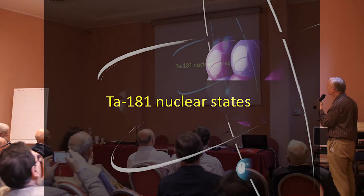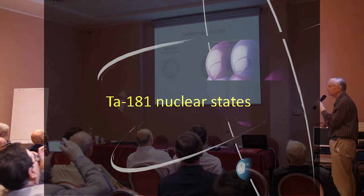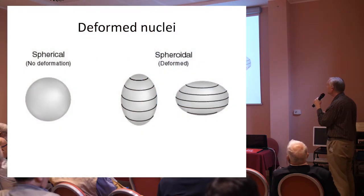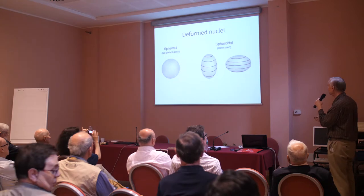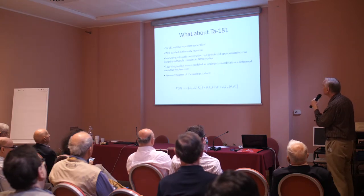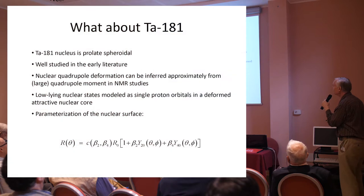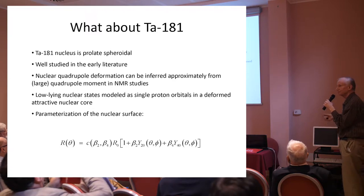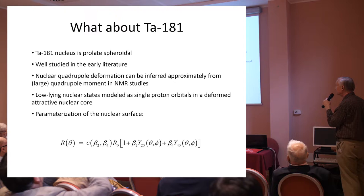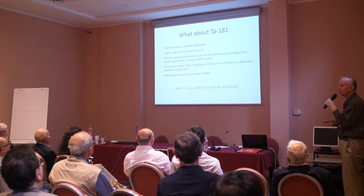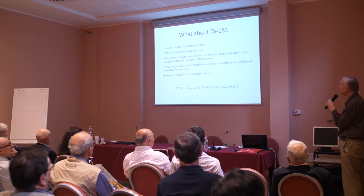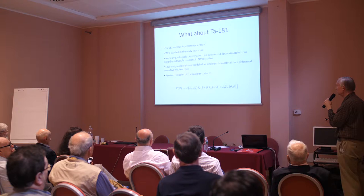Now the nuclear states. Some nuclei are spherical, some are deformed — some look like footballs, some look like basketballs you sat on. Tantalum-181 is a prolate spheroid. In the early literature, basically the 1950s and 1960s, Tantalum-181 figured as a key participant in the deformed nuclear models that were under consideration at the time. There's a parameterization of the nuclear surface adopted for these studies.